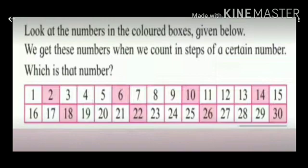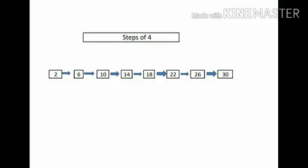Therefore, the number is 4. So here, starting from 2, we get 6, 10, 14, 18, 22, 26, and 30 - these are the steps of 4. Understand children?